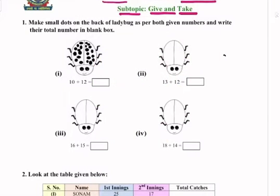Like 10 plus 12 — 10 dots on this side and 12 on this side, so the total number of dots are 22. Question 2: 13 plus 12 — so we will make 13 dots: 1, 2, 3, 4, 5.